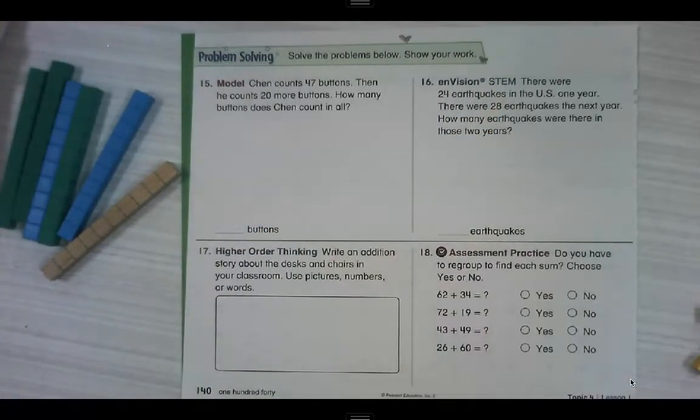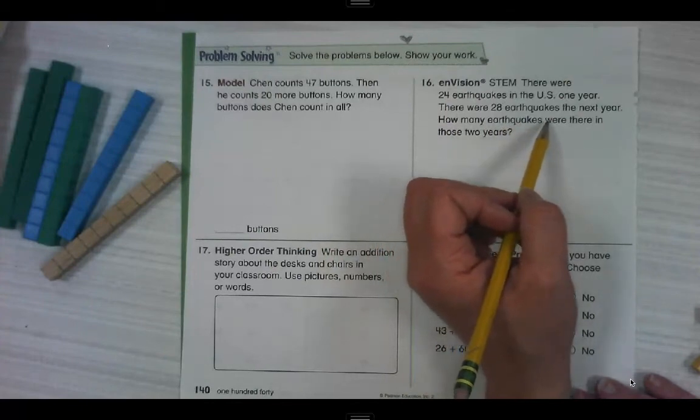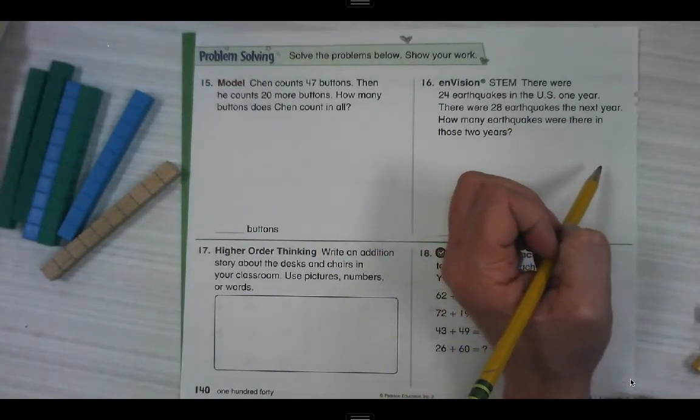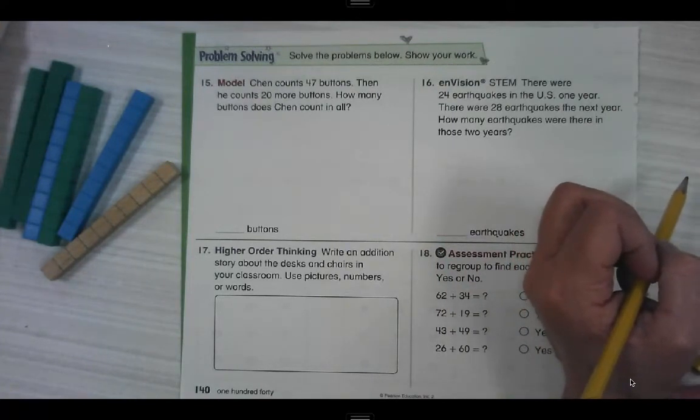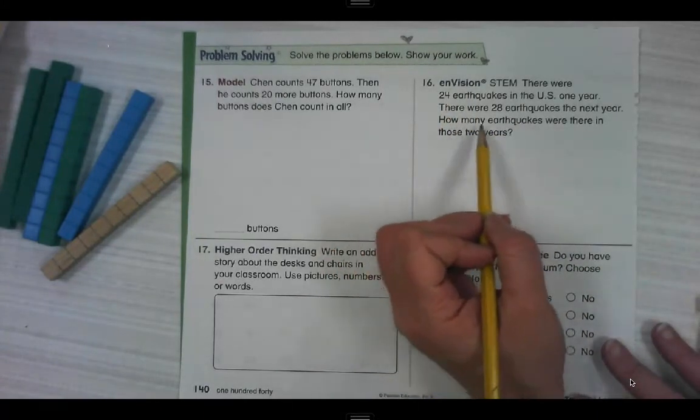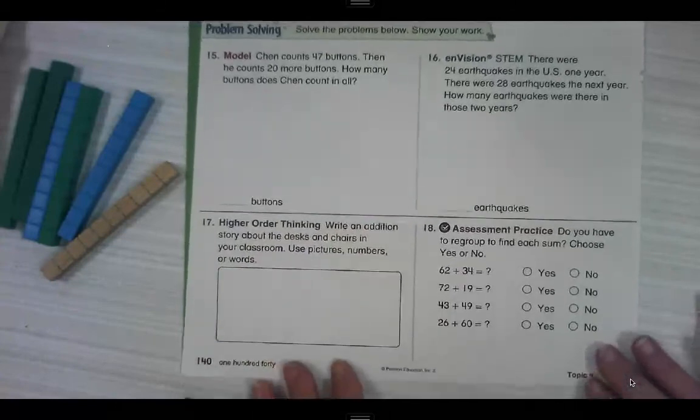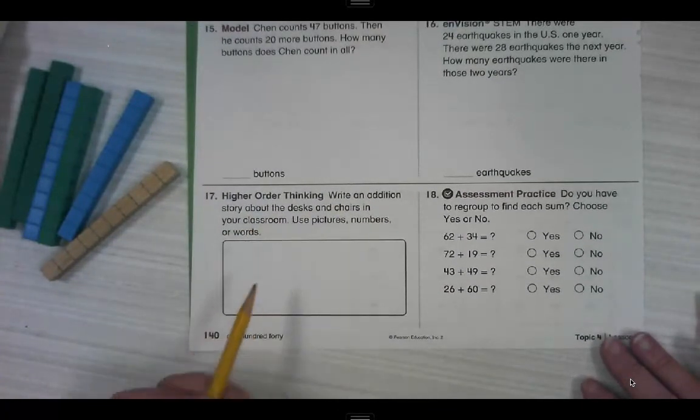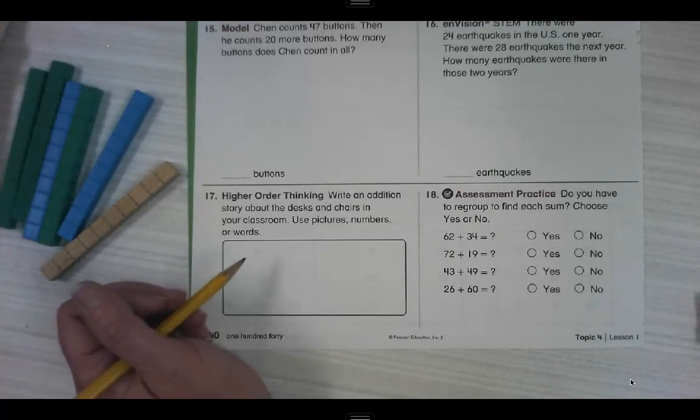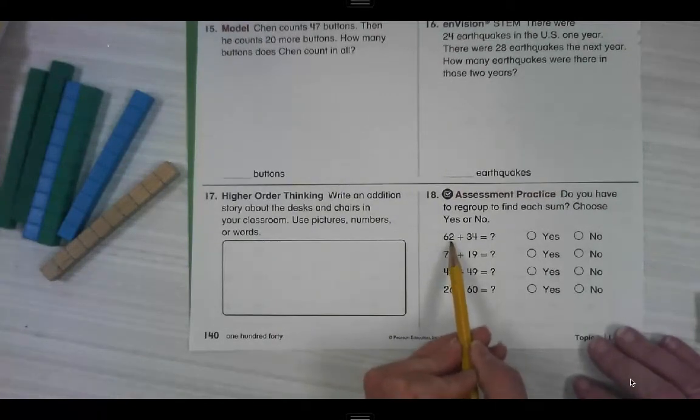STEM question. We love STEM. There were 24 earthquakes in the U.S. one year. There were 28 earthquakes the next year. How many earthquakes were there in those two years? Are they asking us to compare or take something away or combine something? How many earthquakes were there in those two years? That means we're going to put those two years together. Number 17, write an addition story about the desks and chairs in your classroom. Use pictures, numbers, or words. If you're at home doing this, you can write your addition story about something at your house. And number 18, do you have to regroup to find each sum? Choose yes or no. So 62 plus 34. Would we have to regroup?